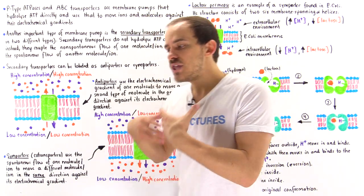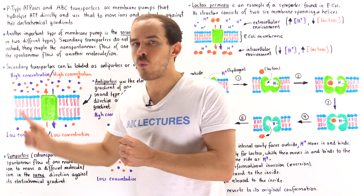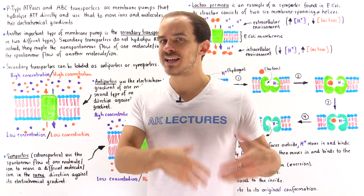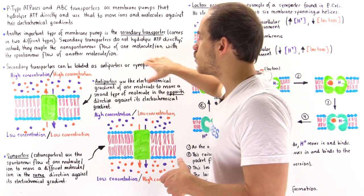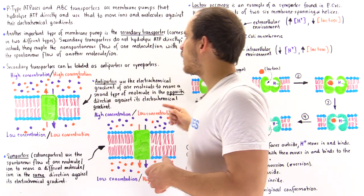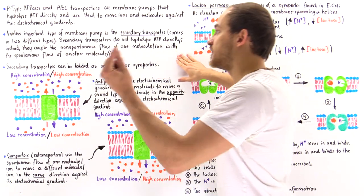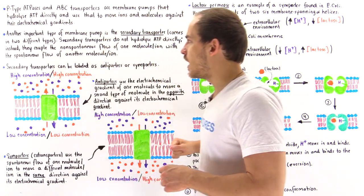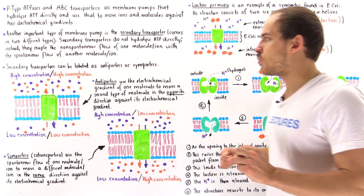Instead, what they do is use an established electrochemical gradient of one molecule to move a different molecule against its electrochemical gradient. So they couple non-spontaneous flow of one molecule or ion with the spontaneous flow of a different molecule or ion. We have two types of secondary transporters.